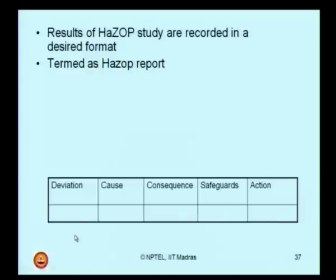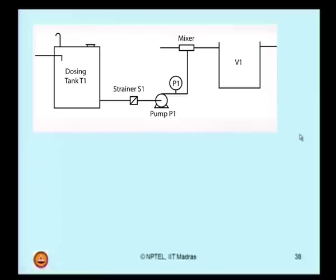Can you guess in which column of this report the primary and secondary keywords will be located? Your guess is right — the primary and secondary keywords will be located in the deviation column of this report. Let us take up another example to understand how we can explicitly write these five columns.